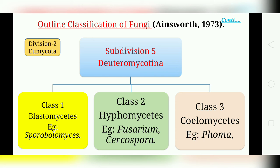The second class is Hyphomycetes. They are highly mycelial or hyphal fungi. They reproduce asexually by formation of conidiomata, such as free conidium spores. Sporodochia and synnemata are also formed, which contain conidium spores. Examples include Fusarium and Cercospora.